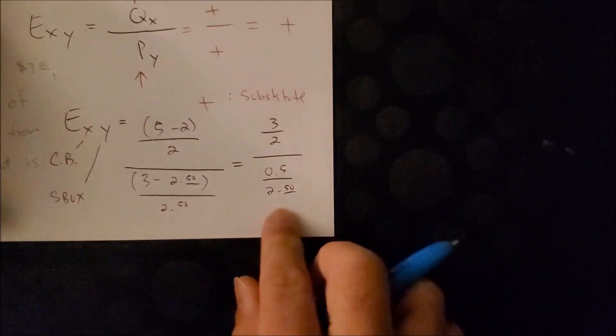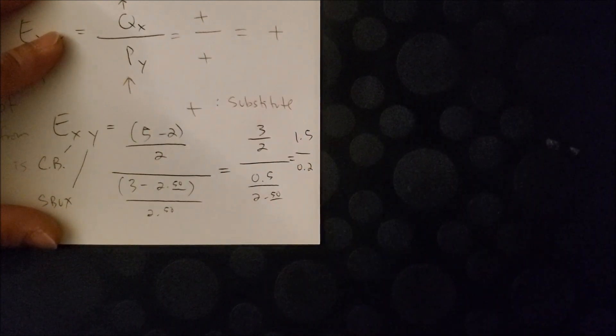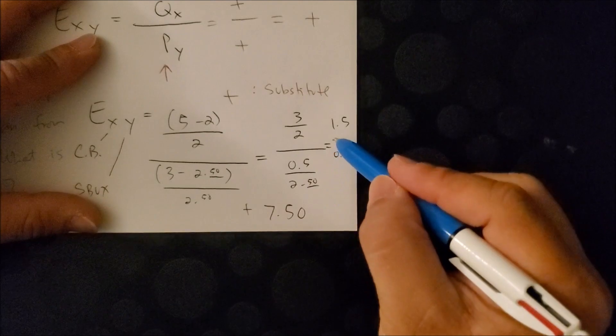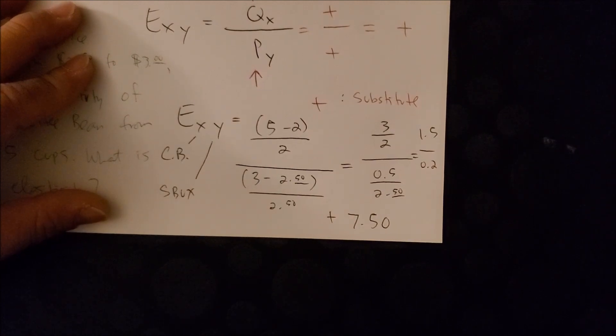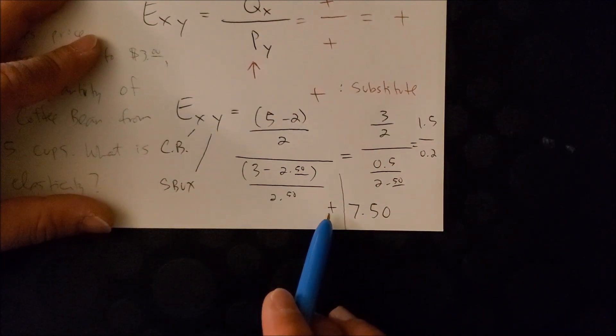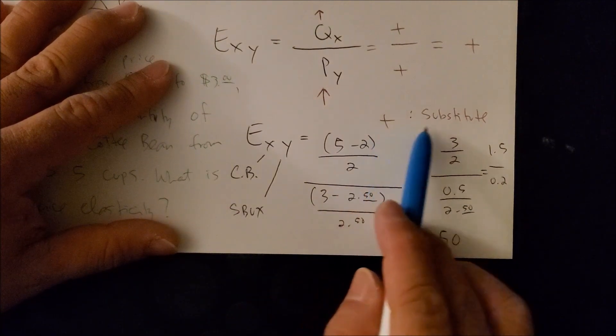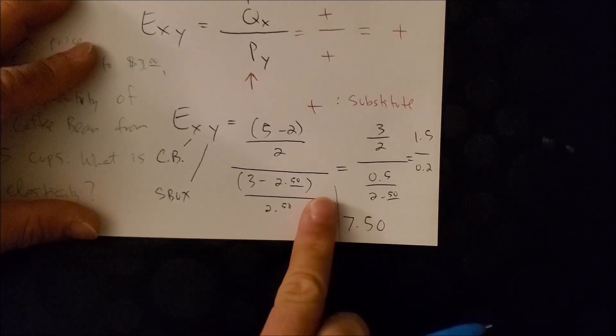Once we know how to solve the equation, we should have here 1.5 over 0.2, which gives us a final answer of 7.50. And it's also a positive sign. If you remember, with the income elasticity, cross-price elasticity also gives us a two-part answer. We can see that we have a positive sign, which says that both Coffee Bean and Starbucks are substitutes to each other. That is their relationship. And we have 7.5, which is greater than 1. So, it is elastic.